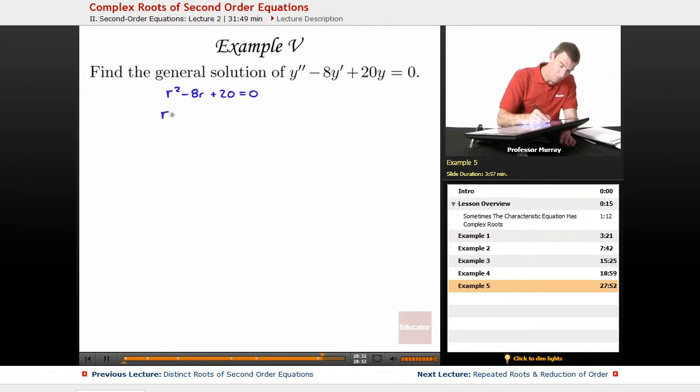So we get r is equal to negative b is positive 8 plus or minus b squared is negative 8 squared, so 64 minus 4ac, a is 1, c is 20, all over 2a, so that's 2.